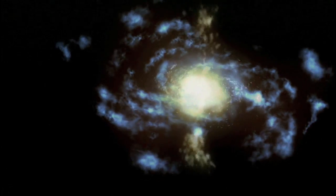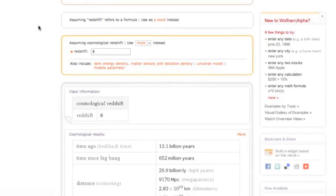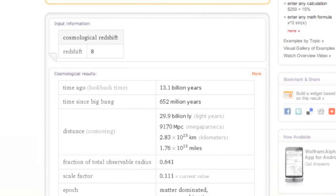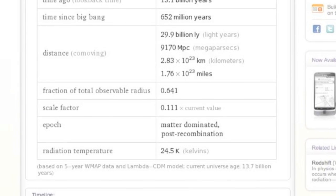The most distant galaxies measured so far are around z equal 8. The light left those galaxies when the universe was only 600 million years old.